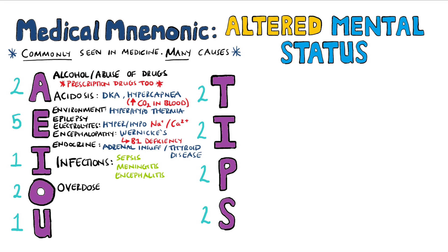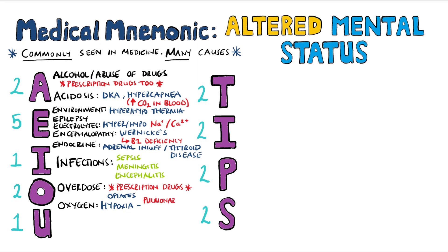O brings us back to drugs — overdose. You need to consider prescription medications such as benzodiazepines, as well as overdoses on things like opiates. The other O is for oxygen. Often, people can present with an altered mental status due to hypoxia. This can come from many different causes, but some common ones include pulmonary edema, pneumothorax or an arrhythmia.